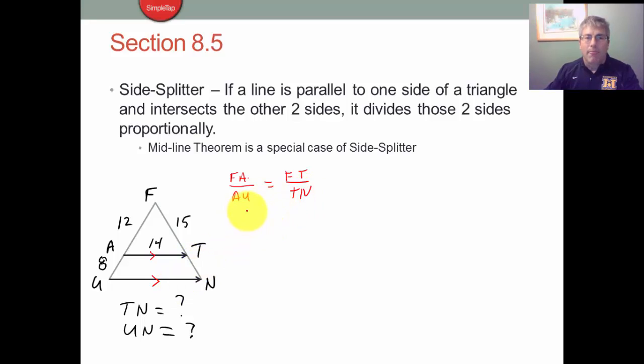So 12 is to 8 as 15 is to TN. We can reduce 12 is to 8 by a factor of 4, so that gives us 3 is to 2 as 15 is to TN. And we know 3TN is 30, divide by 3, and TN is 10.